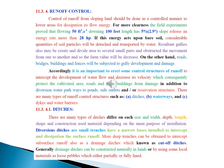Runoff control. Control of runoff from sloping land should be done in a controlled manner to lower area for dissipation of its flow energy. Accordingly, it is important to erect some controlled structures for runoff to intercept the development of water flow and decrease its velocity, which consequently protects the cultivated area, roads, and farm buildings from damage in addition to diversion of water pathways to ponds, safe outlets, and or reservation structures such as ditches. Really, there are many types of ditches that differ in each size and width, depth, length, shape and construction used material depending on the main purpose of installation.